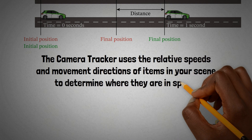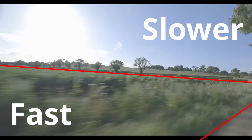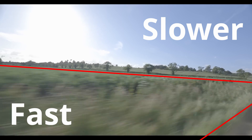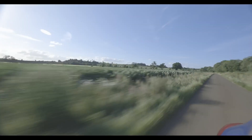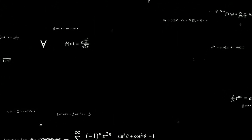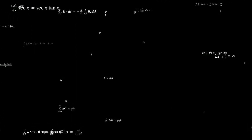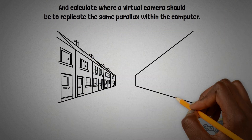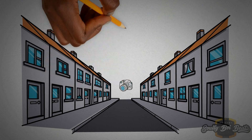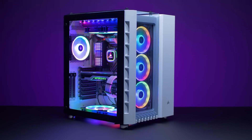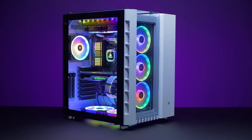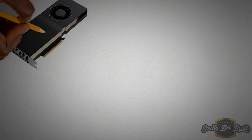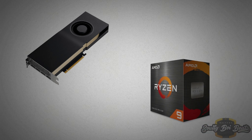For example, when you ride in a car or train, you observe that objects closer to the car move more quickly than objects in the far distance. The camera tracker uses this motion parallax to calculate the position of each element in the physical scene and calculate where the virtual camera should be to replicate the same parallax within the computer. The PC used here can be found in the description, but in short, we are using an RTX A5000 with a Ryzen 9 5950X.